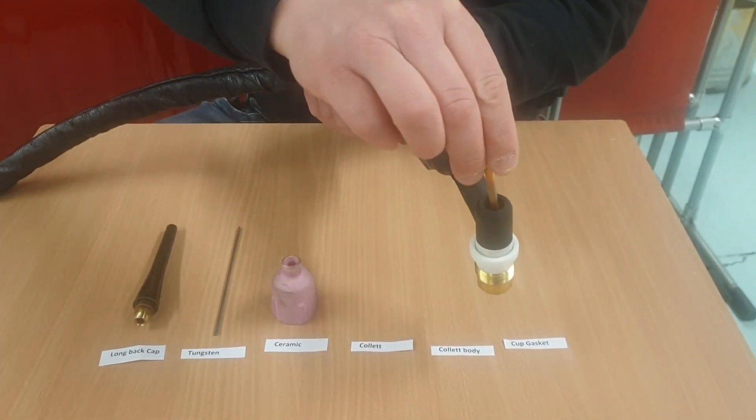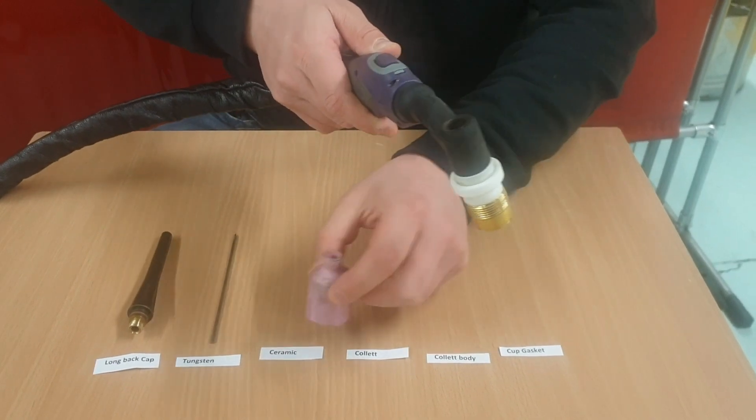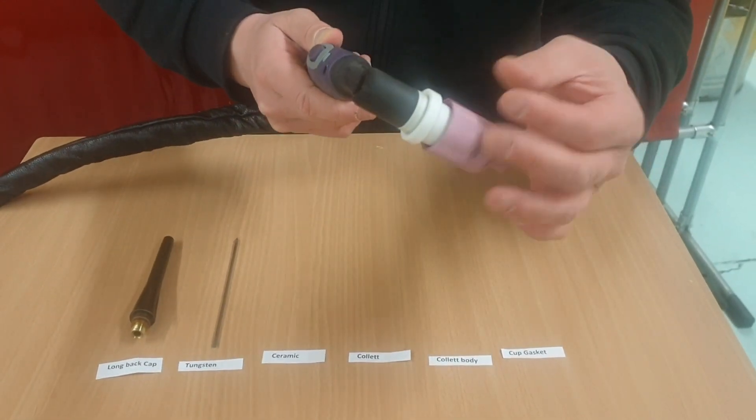We've then put a large collet body on top, screwed it into the torch making sure it's nice and tight, then added our collet which fits the tungsten in and keeps it secure.